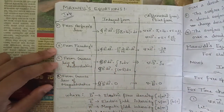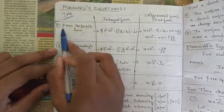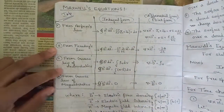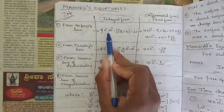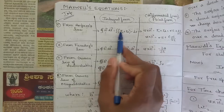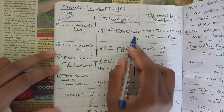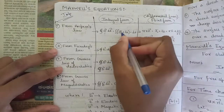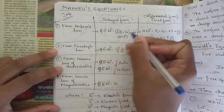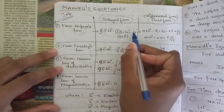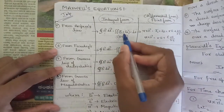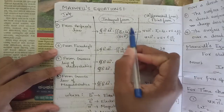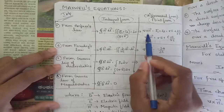From Ampere's law we have obtained Maxwell's equations in both integral form and point form (differential form). The integral form gives the relationship: the line integral of H·dl equals the surface integral of (Jc + Jd)·dS, where Jc + Jd represents the inconsistency in Ampere's law, i.e., del cross H. So the line integral of H·dl equals the surface integral of (Jc + Jd)·dS.